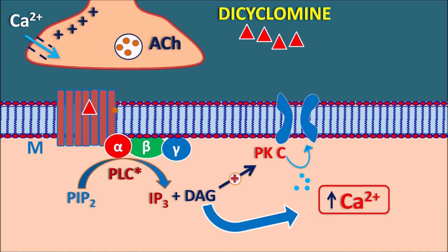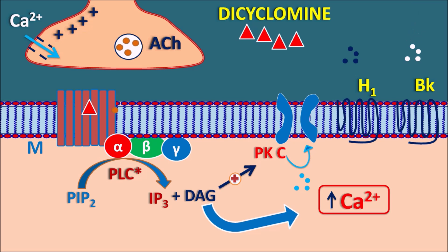In this way Dicyclamine acts as an antispasmodic, but at the same time Dicyclamine can also inhibit the effects of other mediators. For example, GI smooth muscle is equipped with H1 receptors on which histamine can act, as well as bradykinin receptors on which bradykinin can act. Dicyclamine can bind to these H1 receptors and inhibit their activity, and also inhibit bradykinin receptors. So histamine and bradykinin cannot act on these receptors, preventing the muscle contraction produced by both mediators.